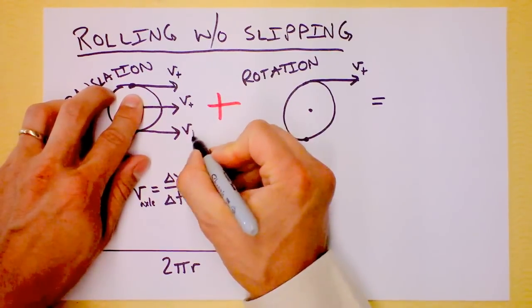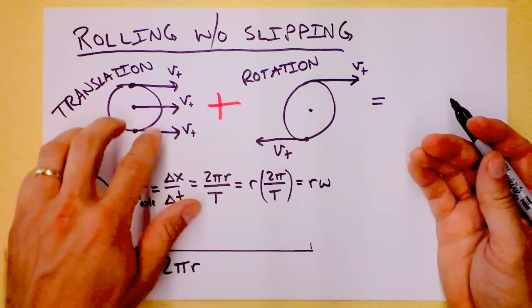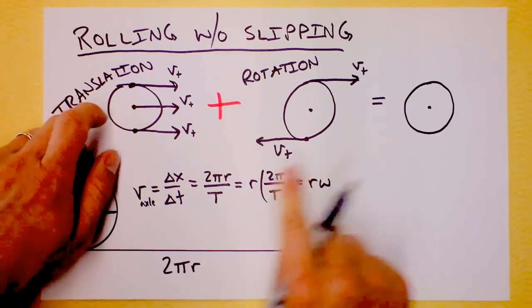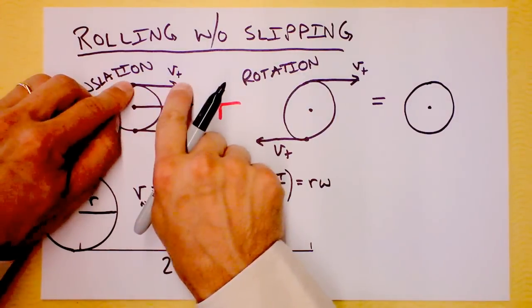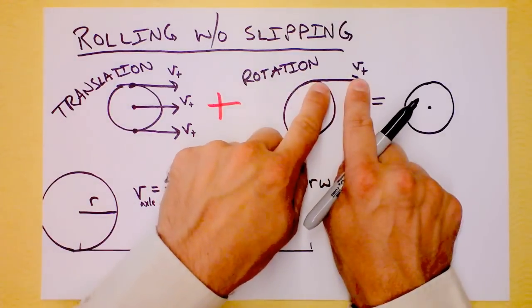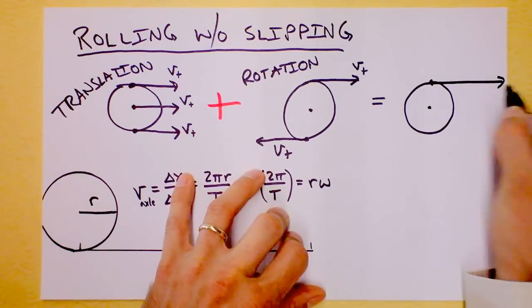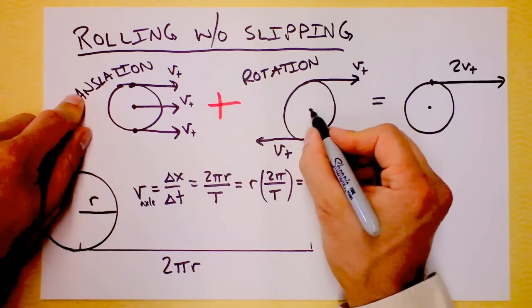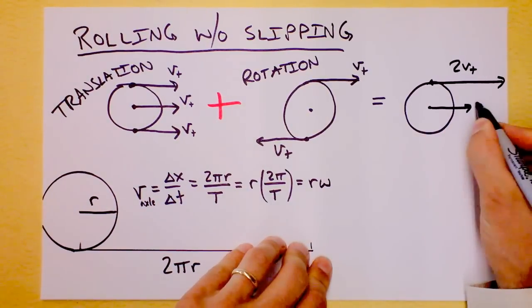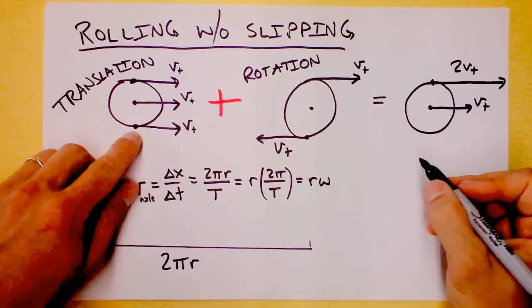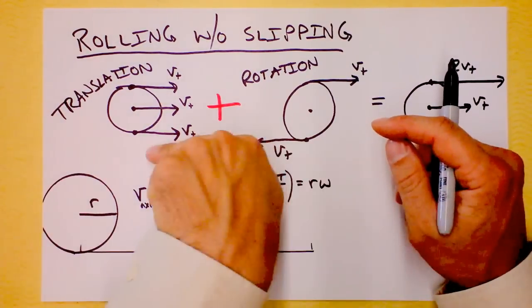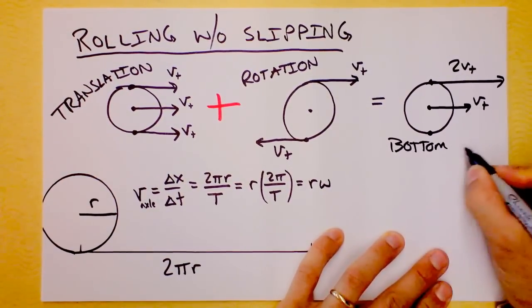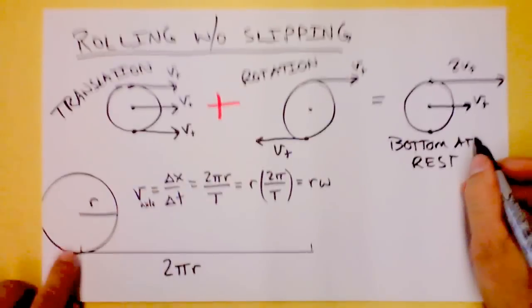Let's say we happen to have a translating thing that's translating at the same rate as it's rotating. I'm going to add this to this and draw what will result. Check this out. On the top, we've got tangential speed of the top from translation, tangential speed of the top from rotation. So at the top we've actually got twice the tangential speed. That's 2 times v_t. For the center, we've got tangential speed from the translation, and no speed at all from the rotation. So we have simply v_t on the axle. And on the bottom, we've got tangential speed that way from translation, and tangential speed that way from rotation. And in fact, the bottom is at rest.